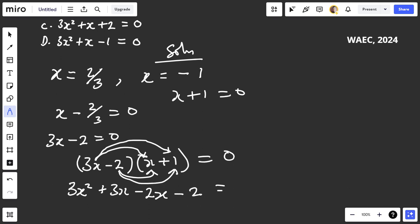So you have 3x² + 3x - 2x, which simplifies to 3x² + x - 2 = 0. This is the quadratic equation that was used to get these roots.